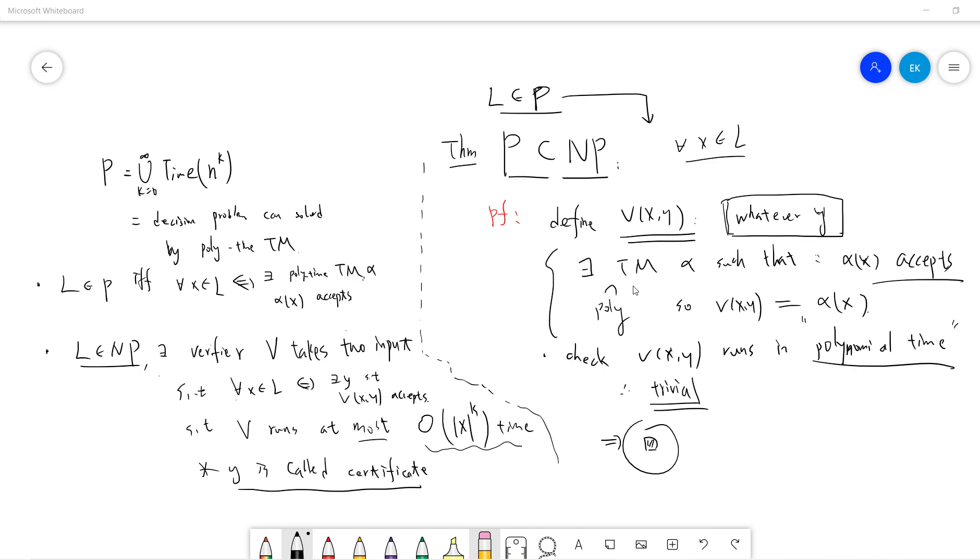I just define a v of x, y to be, I will, I already know there is a point turning machine alpha, such as alpha of f accept or reject, right? So, I just let v of x, y to be alpha x.